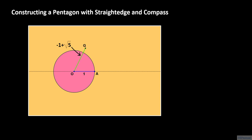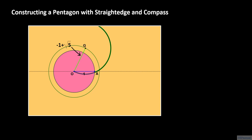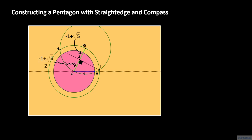Using segment OG as the radius for our compass, we center the compass at O and construct the circle with radius OG. We then center the compass at G and construct a second circle with the same radius. We label the points of intersection between these two circles as the points H and I. Segment HI is a perpendicular bisector of segment OG. Let J be the point of intersection between the two segments. Then the length of segment OJ is half of negative 1 plus the square root of 5.